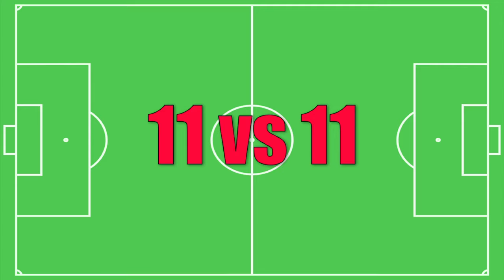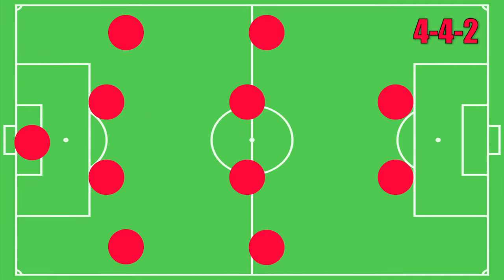We'll begin by looking at some formations. Professional soccer is 11 players versus 11 on the field at one time. One of the most basic formations in the game of soccer is the 4-4-2 setup. We list formations according to the number of defenders, midfielders, and forwards in that exact order — ignore the goalkeeper, then defenders, then midfielders, then forwards.